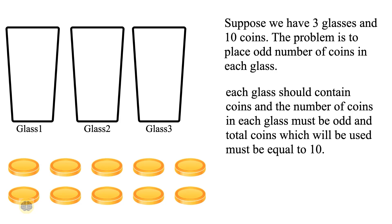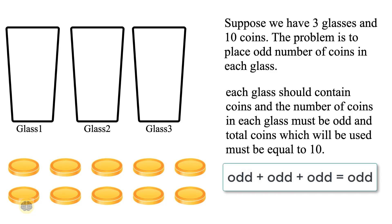It is not possible to use all 10 coins with each glass having an odd number of coins. This is because if you add an odd number of coins an odd number of times, the result is always odd, not even. But here there are 10 coins, which is even — that is the challenge. There are an even number of coins but an odd number of glasses.